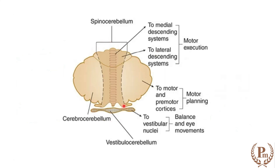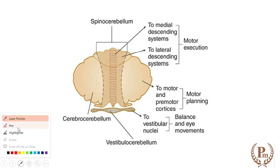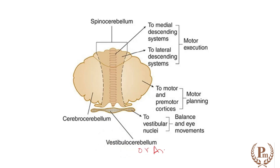Coming to the functional division: we have the vermal area, the intermediate or paravermal area, and the lateral area. Different names are given based on their connections. Since the flocculonodular lobe is connected to the vestibular apparatus, it is also known as the vestibulocerebellum. Phylogenetically, it is one of the oldest, hence it is also called the archicerebellum.